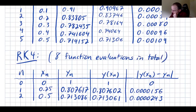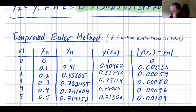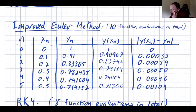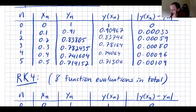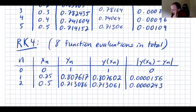How many function evaluations did the improved Euler method use? It requires two evaluations per iteration and there were five iterations, so 10 total. So RK4 used fewer function evaluations — eight versus ten — and yet got about 100 times better accuracy. Two fewer function evaluations and a hundred times better. That is remarkable.